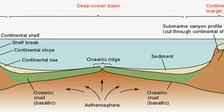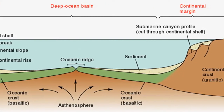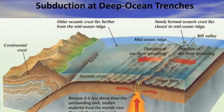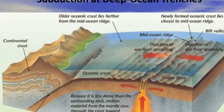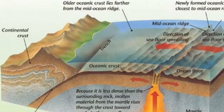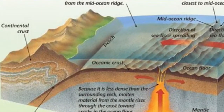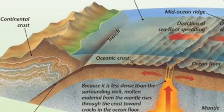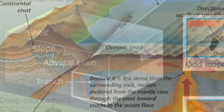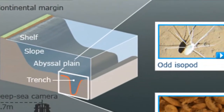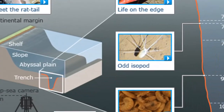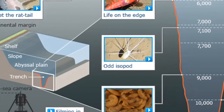Now we will move on to some details about active continental margins. Along some coasts, the continental slope descends abruptly into a deep ocean trench. In this situation, the landward wall of the trench and the continental slope are essentially the same feature, and the continental shelf is very narrow if it exists at all. Active continental margins are located primarily around the Pacific Ocean, in areas where oceanic lithosphere is being subducted beneath the leading edge of a continent. Here, sediments from the ocean floor and pieces of oceanic crust are scraped from the descending oceanic plate and plastered against the edge of the overriding continent.